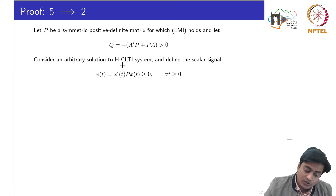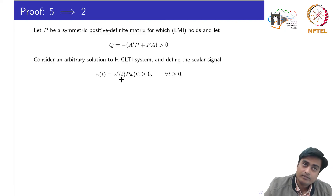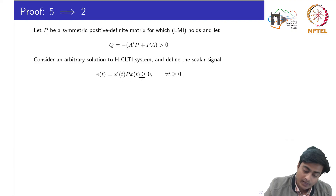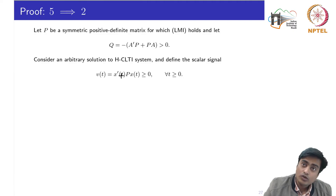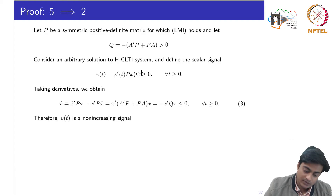Consider an arbitrary solution to the system and define the scalar signal v(t), which is a quadratic form with weight matrix P given by x-transpose P x, which is greater than or equal to 0 for all t ≥ 0. We are specifying that there is a signal v which could also be 0.